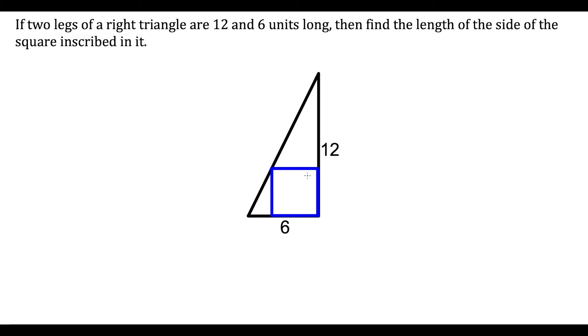What's up, I'm Vin and today I want to show how to find the side length of a square inscribed in a right triangle. We have this right triangle here and we're told the two legs are 12 and 6 units long, and we want to find the length of the side of the square inscribed.